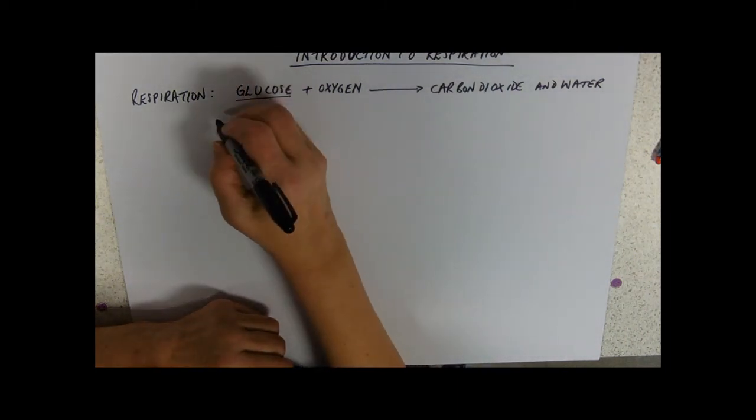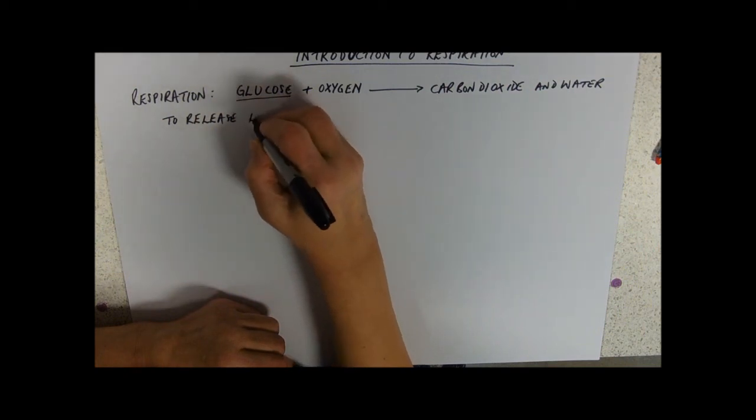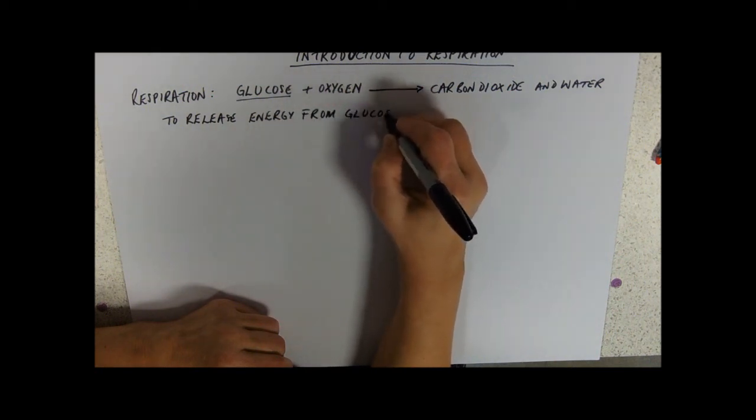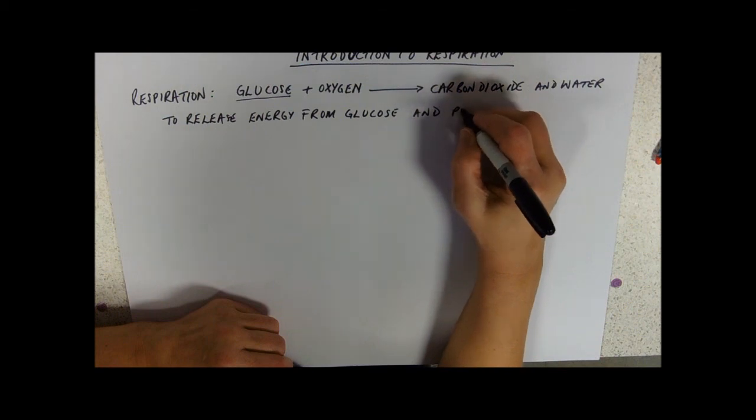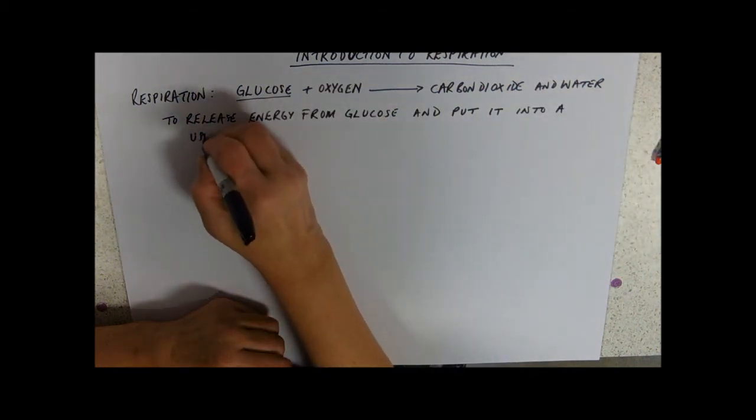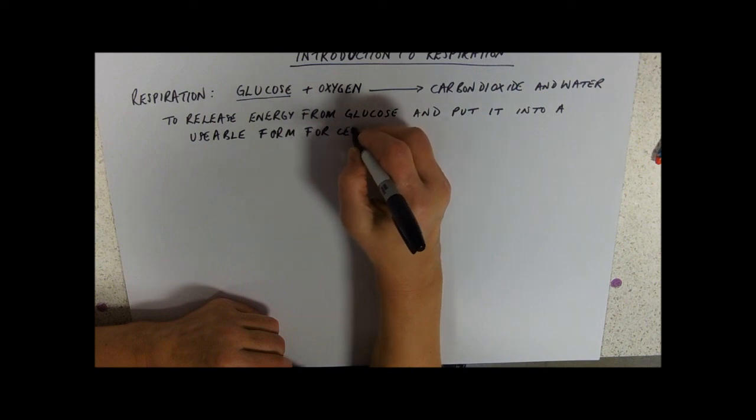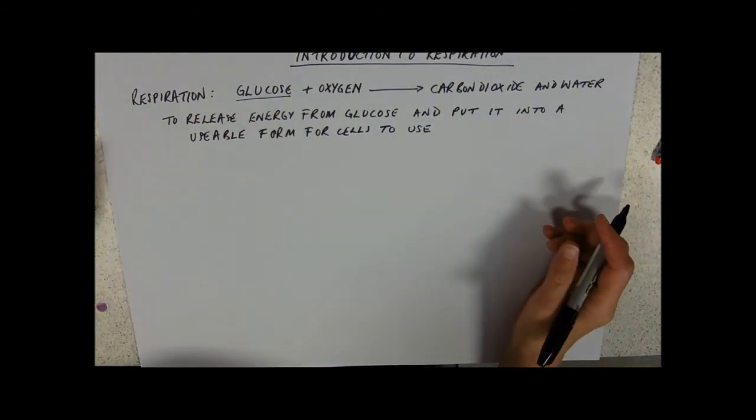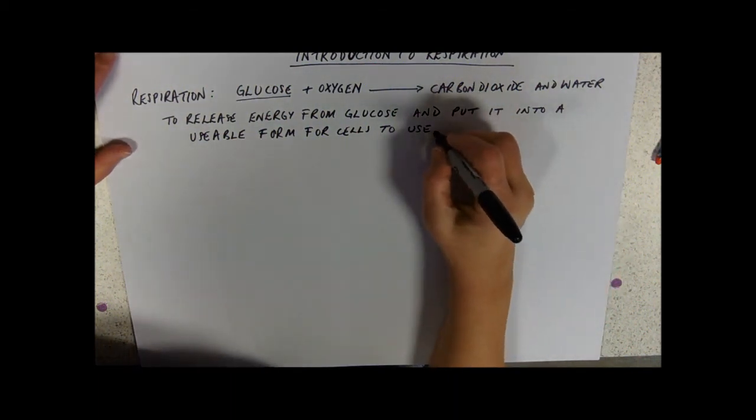So what is respiration for? It is to release the energy from glucose and put it into a usable form for cells to use. You can release energy from glucose by sticking a boiled sweet in a Bunsen burner and burning it, and all its energy is heat. But we need it in a usable form for cells to use.